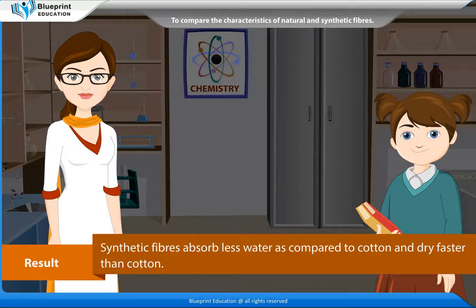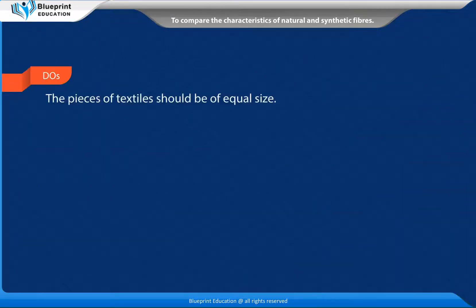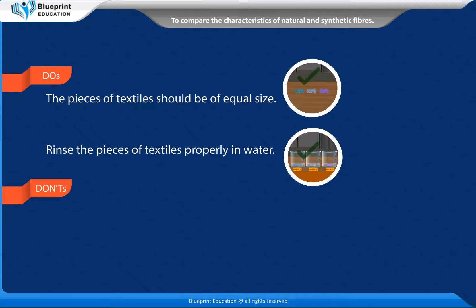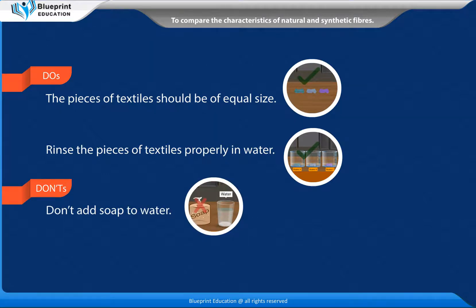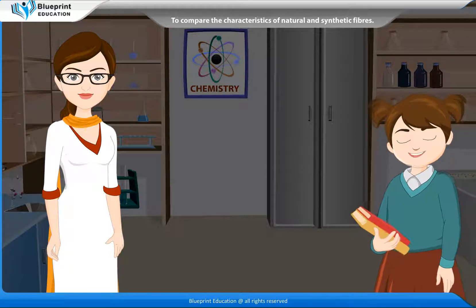Result: Synthetic fibers absorb less water as compared to cotton and dry faster than cotton. Synthetic fibers are durable, less expensive and easier to maintain. Do's: The pieces of textiles should be of equal size. Rinse the pieces of textiles properly in water. Don't: Don't add soap to water. Thank you, madam. This experiment has made the concept very easy to understand.